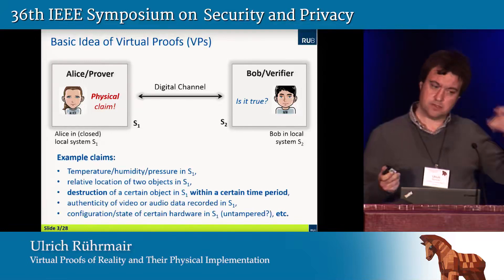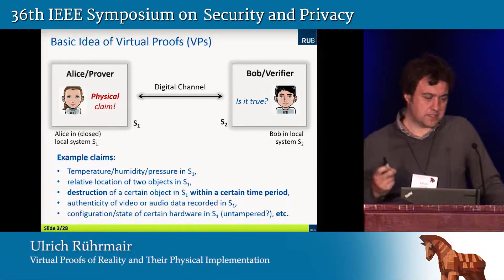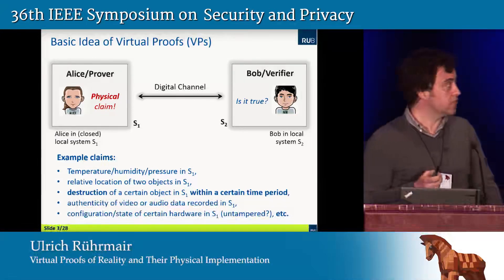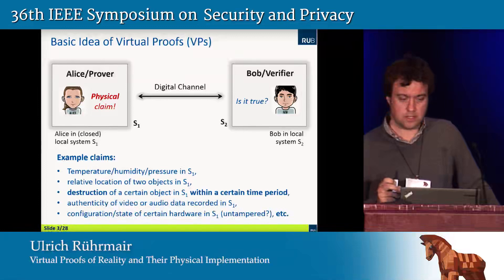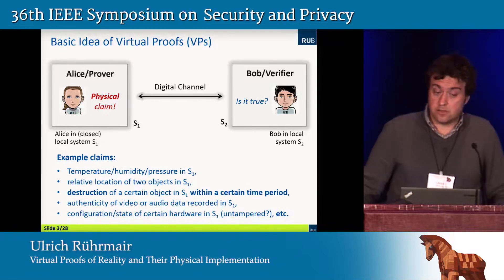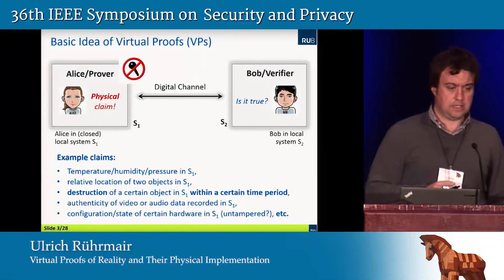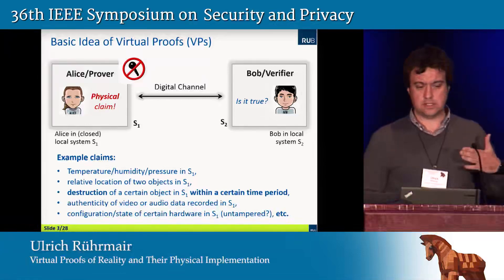To familiarize you with the type of claims I had in mind when designing this primitive, here's a list of example claims. Alice could claim the temperature, the humidity, or the pressure in her system; the relative location of two objects in her system; the destruction of a certain object within a certain time period; the authenticity of video or audio data recorded in her system; or the configuration or state of certain hardware. As you can see, we're going beyond the classical secure sensor setting.